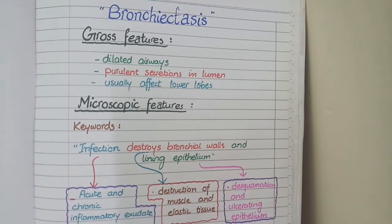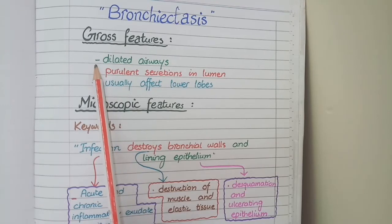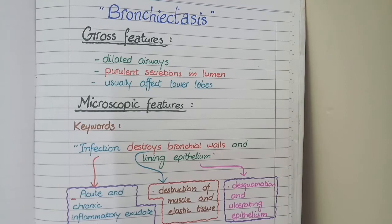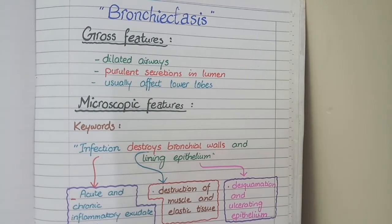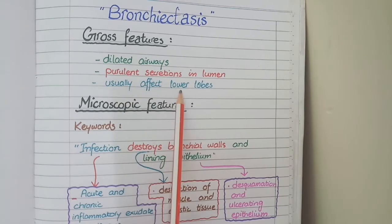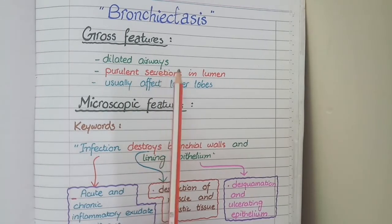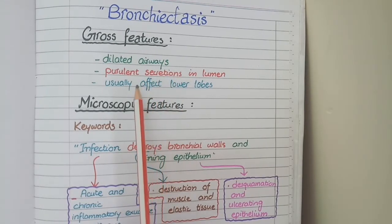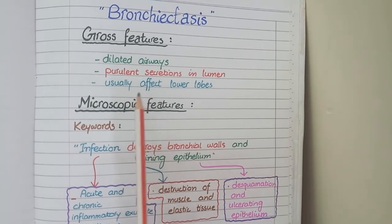The next disease is bronchiectasis. On gross specimen, you see dilated airways because the elastic tissue in the walls has been destroyed by infection. As there is infection, you see purulent secretions in the lumen. Since perfusion of blood is maximum in the lower part of the lungs, bacteria tend to gravitate to the bottom, so lower lobes are more affected in bronchiectasis. Overall, gross features include dilated airways with purulent secretions in the lumen, predominantly in the lower lobes.